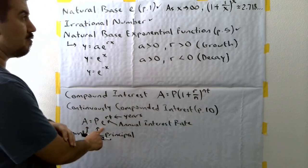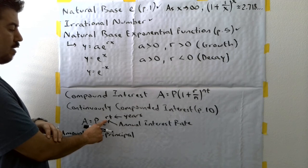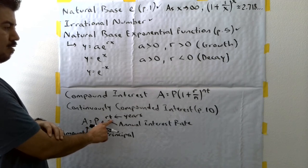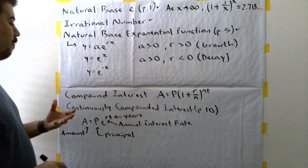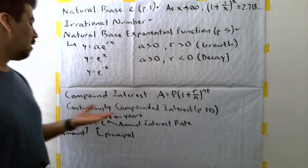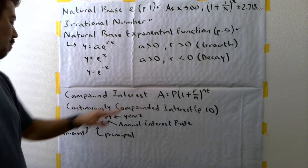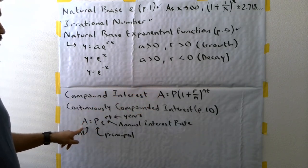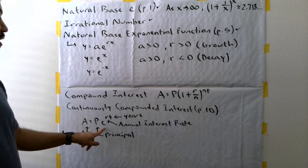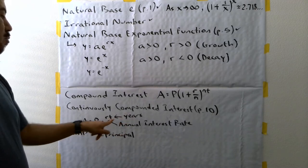And then we still have this R value and the T value there. So, if a compound interest formula gets compounded continuously, then we can actually convert the formula to this, where the amount is equal to the principal times the natural base E raised to the R times T, or the annual interest rate times the number of years.